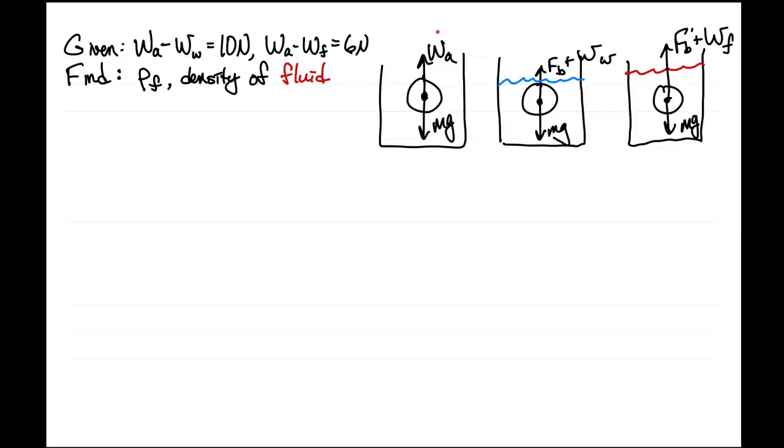In this problem, we have an object hanging from a spring balance. The balance registers 30 newtons when hanging in air, 20 newtons when immersed in water, and 24 newtons when immersed in another liquid. We want to find the density of that other liquid, so we have our three cases illustrated.